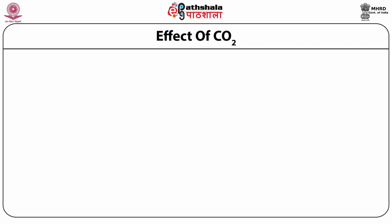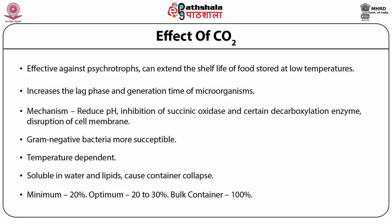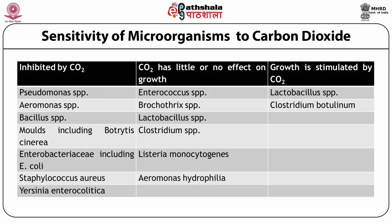The antimicrobial properties of carbon dioxide have been known for some time. More recent work has shown that carbon dioxide is effective against psychrotrophs and has potential for extending the shelf life of food stored at low temperatures. Carbon dioxide increases the lag phase and generation time of microorganisms, and these effects are enhanced at lower temperatures. Antimicrobial mechanisms include carbon dioxide lowering pH, inhibition of succinic oxidase at concentrations greater than 10%, inhibition of certain decarboxylation enzymes, and disruption of the cell membrane. The sensitivity of selected spoilage and pathogenic bacteria to carbon dioxide is shown in the table.